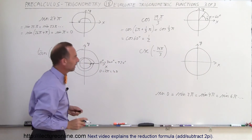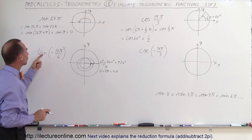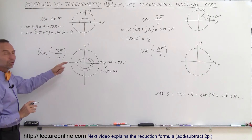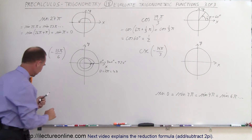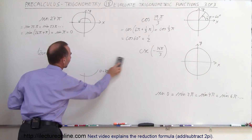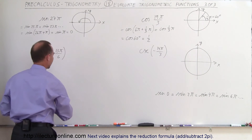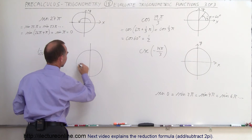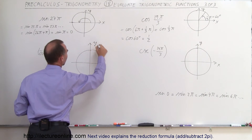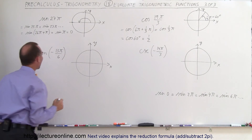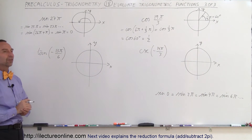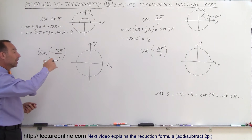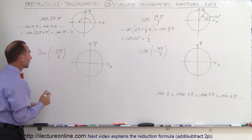Next, we have the tangent of minus 13π/6. I'm going to redraw the unit circle because I'll probably need it. So here's the unit circle, there's the y-axis and the x-axis. How big is minus 13π/6? I can go in the negative direction and see what that gives me.